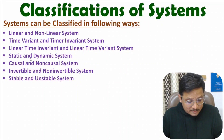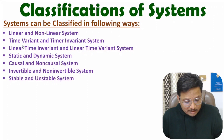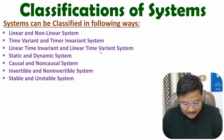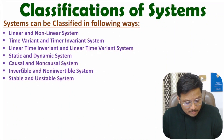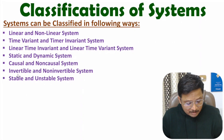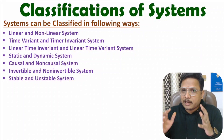Systems can be classified as linear and nonlinear, time variant and time invariant, linear time invariant and linear time variant, static and dynamic, causal and non-causal, invertible and non-invertible, and stable and unstable. I will discuss all these categories of classification in great detail.